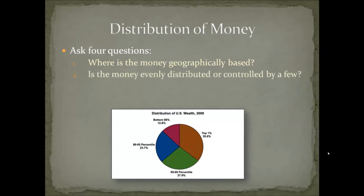The second question is: is the money evenly distributed or controlled by a few? This is a very misunderstood question. Looking at the United States wealth distribution graph, the bottom 80% control 12.8% of the entire wealth, whereas the top 20% control 87.2%. The top 1% control 35%, and this has been increasing over time. If the top 20% pulled all their money out of the economy, it would collapse the entire US economy.